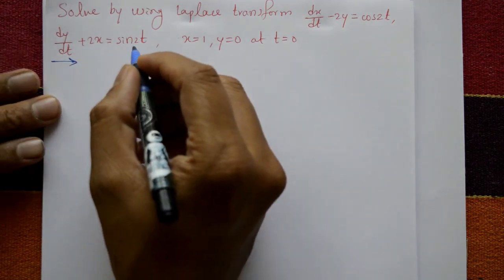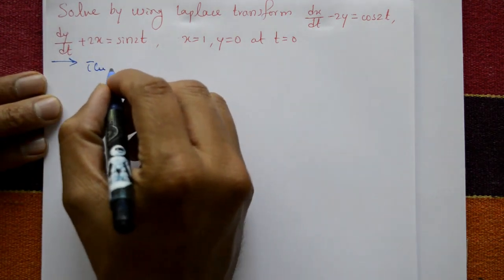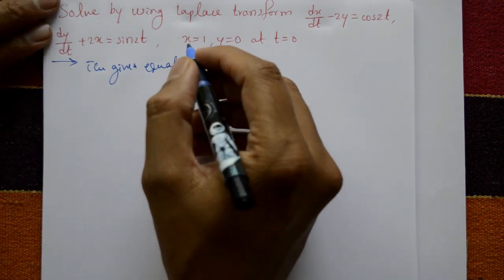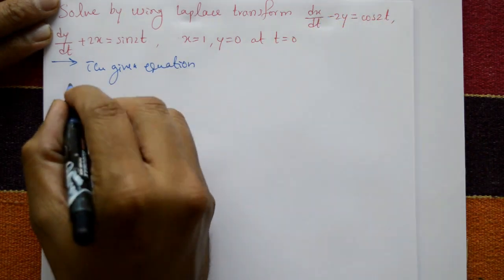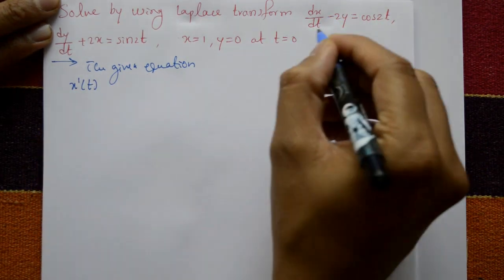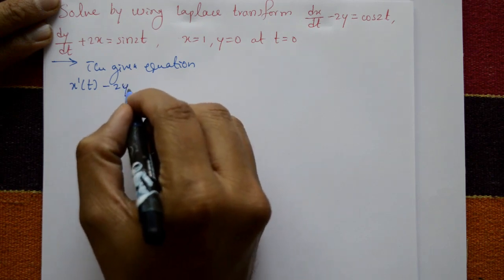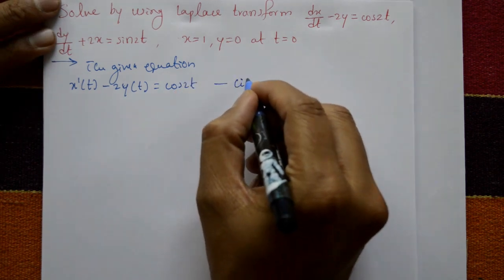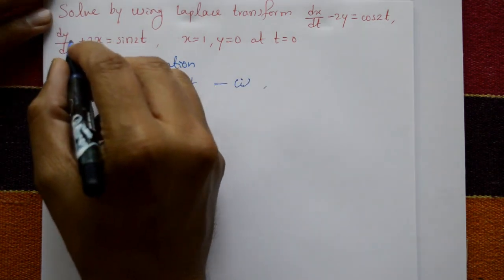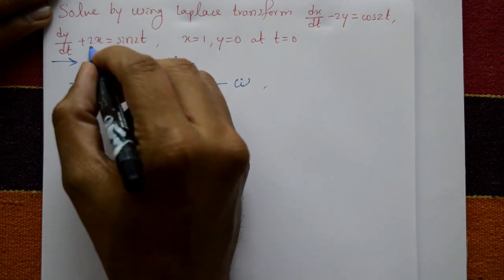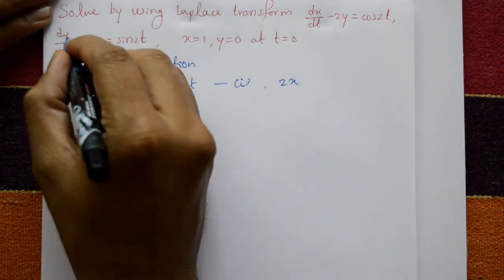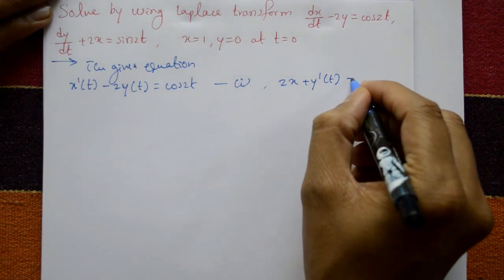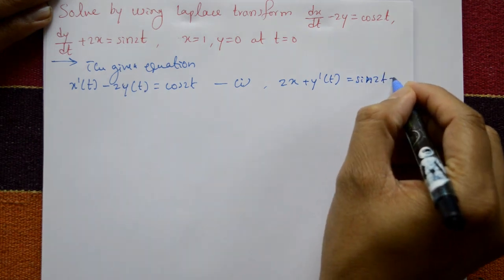The given equations are written as: first, x'(t) minus 2y(t) equals cos 2t — this is equation 1. Second, 2x(t) plus y'(t) equals sin 2t — this is equation 2.